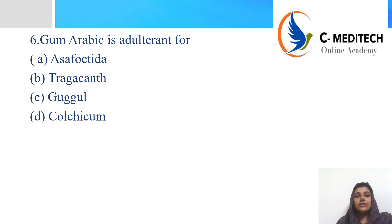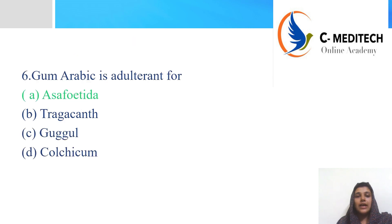Sixth question: gum arabic is the adulterant of which drug? Option A is the correct answer. Adulterant and allied drugs are important to note.